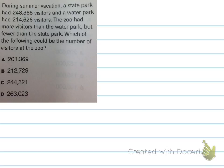Okay. Well, let's think back. So over the summer, there was a state park and a water park. It looks like the state park had more visitors than the water park. And then they're saying the zoo had more visitors than the water park, but fewer than the state park. So that number is going to be somewhere in between the state park visitors and the water park visitors. So it's going to be in the middle.